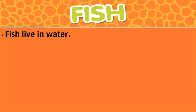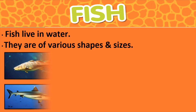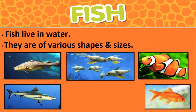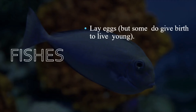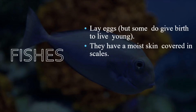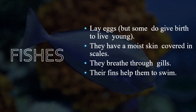The next type is fish. Fishes live in water and are of various shapes and sizes. Most fishes lay eggs, but some do give birth to live young. They have a moist skin covered in scales. They breathe through gills, and their fins help them to swim.